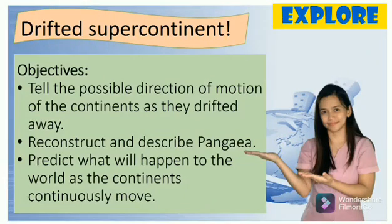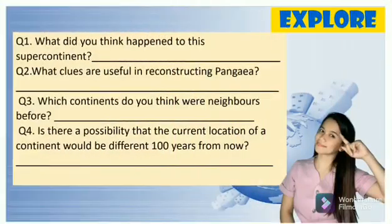Drifted Supercontinent — objectives: Tell the possible direction of motion of the continents as they drifted away. Reconstruct and describe Pangea. Predict what will happen to the world as the continents continuously move. Answer the following guide questions by examining the giant landmass called Pangea.